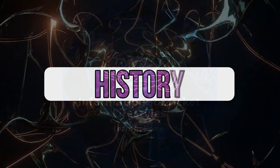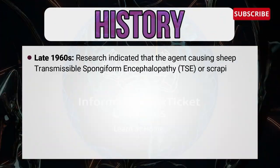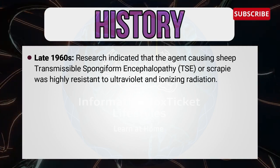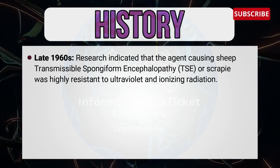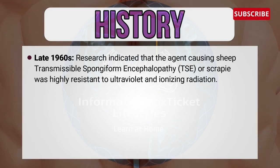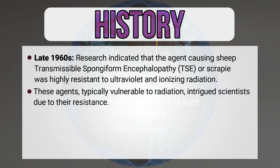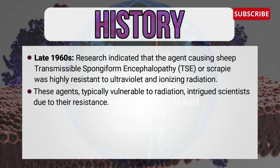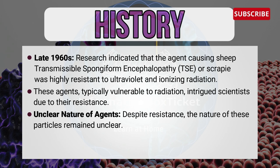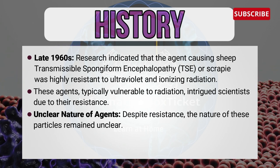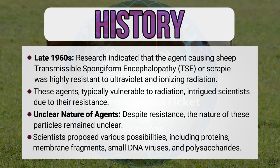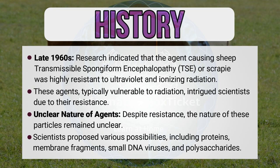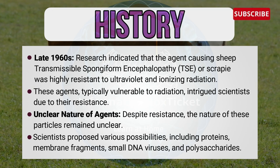Now let's go into the history of prions. In the late 1960s, research indicated that the agent causing sheep transmissible spongiform encephalopathy, or scrapie, was highly resistant to ultraviolet and ionizing radiation. These agents, typically vulnerable to radiation, intrigued scientists due to their resistance. Despite this resistance, the nature of these particles remained unclear. Scientists proposed various possibilities including proteins, membrane fragments, small DNA viruses, and polysaccharides.